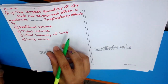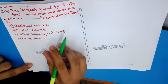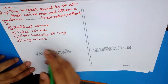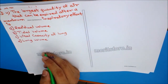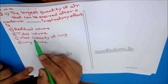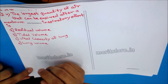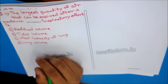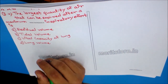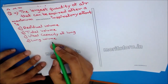Question 4: The largest quantity of air that can be expired after a maximum inspiratory effort is? Options: A) Residual volume, B) Tidal volume, C) Vital capacity of lung, D) Lung volume. The vital capacity of the lung is that quantity. Residual volume is air remaining in lungs after forcible expiration (~1100–1200 ml). Tidal volume is air inspired or expired during normal respiration (~600–800 ml). The answer is option C.